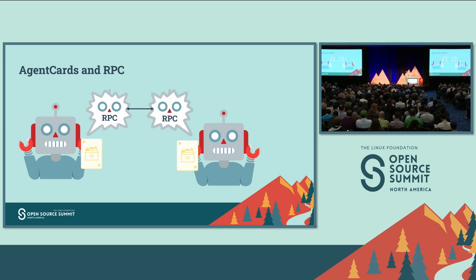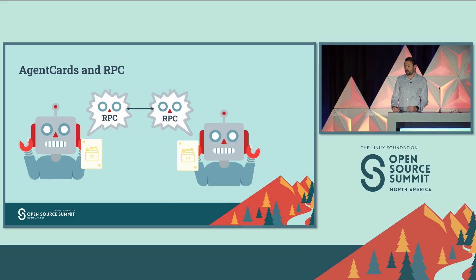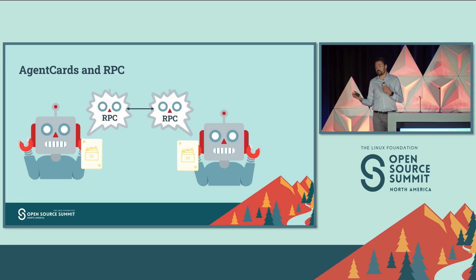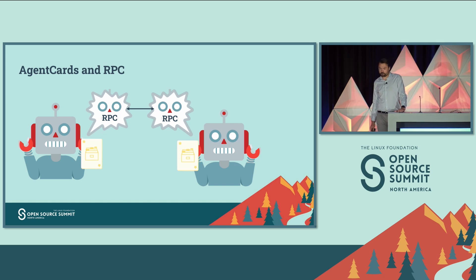For 'what they can do,' we have this idea of skills. Agents have things they can accomplish, which they expose via their skills. These are loosely-defined — not a typed schema describing exactly the inputs and outputs, but more of a general description like 'I can help you manage your calendar.' And then finally, 'how to contact them' — the protocol has some optional parts and various different transports. The agent card is the place to expose the specifics of what you support in the protocol.